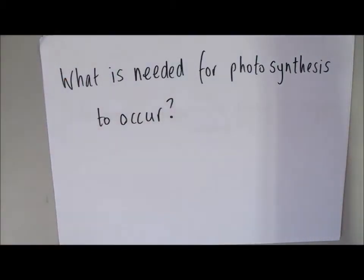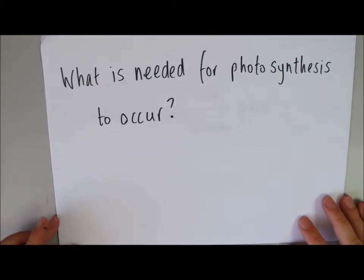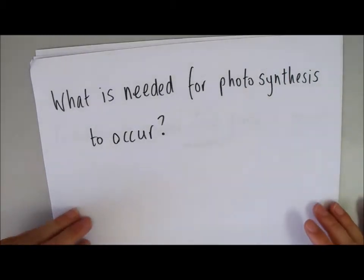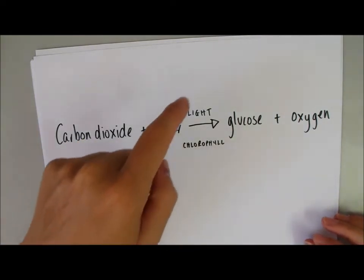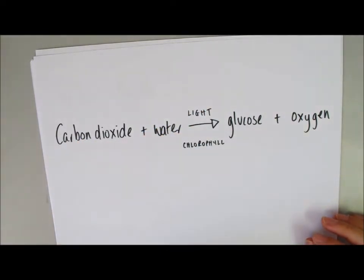But, what are we actually going to do? Well, first of all, we need to think what is needed for photosynthesis to occur. So, if we look back at our equation, we're going to need carbon dioxide, we're going to need water, we're going to need light, and we're going to need chlorophyll.